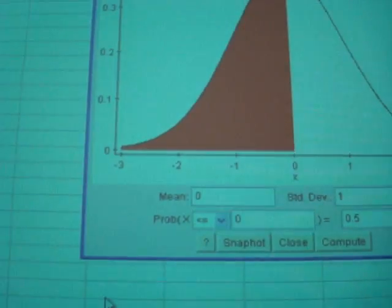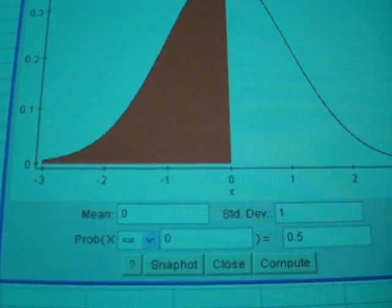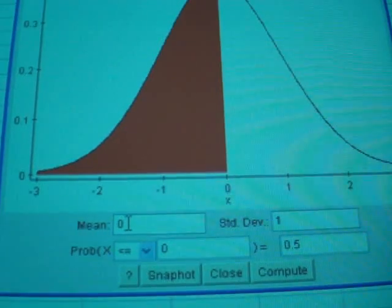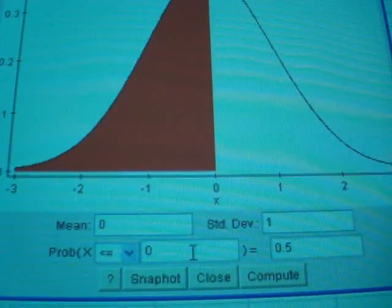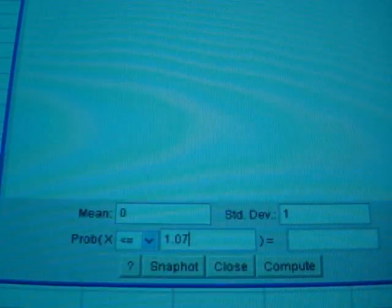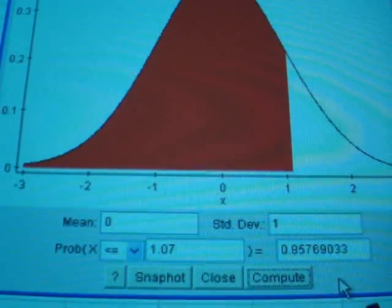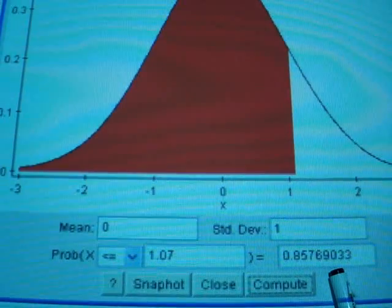And so if we go back to the first one, if you put in a mean of 0, standard deviation of 1, and we want to find the area less than 1.07, that's 0.8577. This is essentially the number that we found using our table.